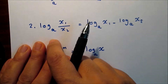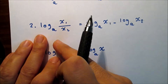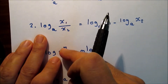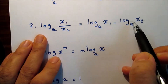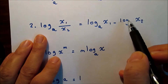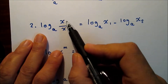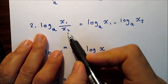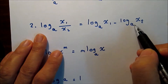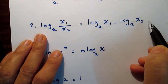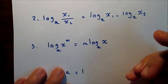The second law, or the division law: division inside the log can be turned into subtraction outside the log and vice versa. So log base a of x1 over x2 equals log base a of x1 minus log base a of x2, and the opposite is also true.